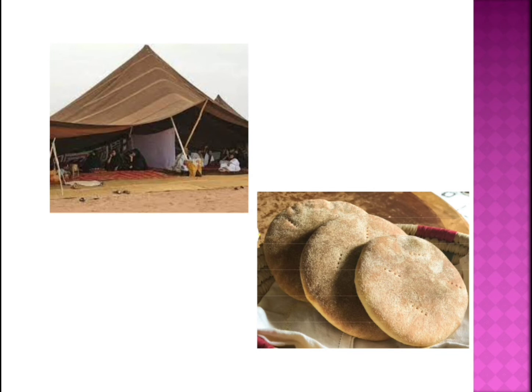For their livelihood, they keep cattle — goats, sheep, and camels — and sell milk, milk products, or wool from the sheep. Nowadays, most people have shifted to cities where they don't need to move from place to place. They can settle in one place and find a job. Some sell carpets and rugs, and some have started doing pottery work to earn their livelihood.